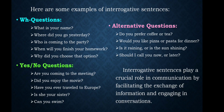Next is alternative questions. For example: Do you prefer coffee or tea? Would you like pizza or pasta for dinner? Is it raining or is the sun shining? Should I call you now or later? These types of questions are called alternative questions — they offer two options, and the answer can be either one.